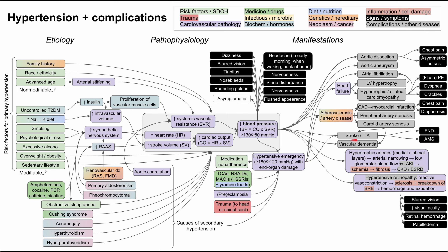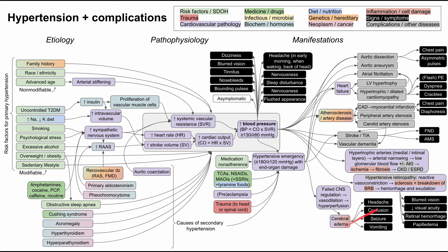Hypertensive emergency can predispose to stroke, more commonly hemorrhagic — very high blood pressure going to the brain makes clotting harder and blood may bleed into the brain. Additionally, if the brain cannot autoregulate and decrease blood flow when blood pressure exceeds 180/120, cerebral vessels vasodilate and the brain becomes hyperperfused. This causes cerebral edema, presenting with headache, confusion, seizures, and vomiting — all considered end-organ damage in hypertensive emergency.